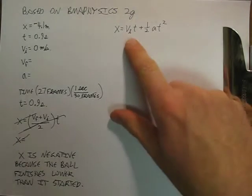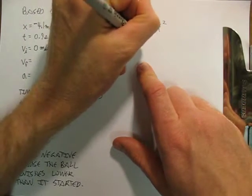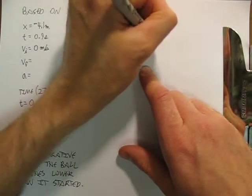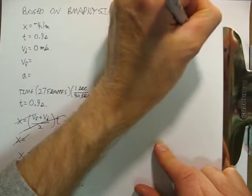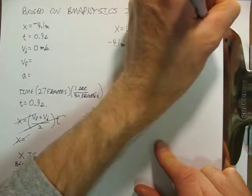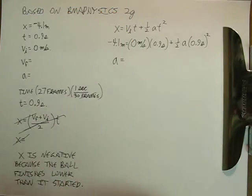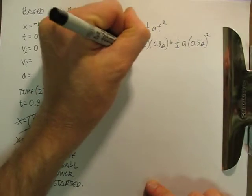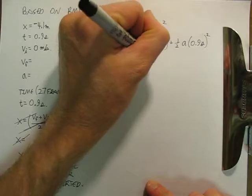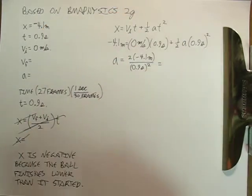Now, we can plug in some things here. Negative 4.1 meters equals 0 meters per second times 0.9 seconds plus 1 half A times 0.9 seconds squared. So, to get A by itself, hit pause and work on that for a second. What I'm going to have is A by itself is 2 times negative 4.1 meters divided by 0.9 seconds squared.